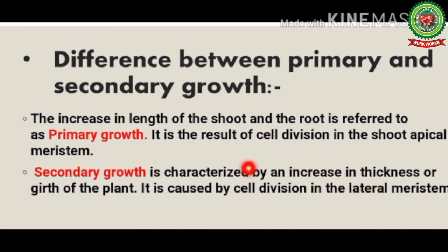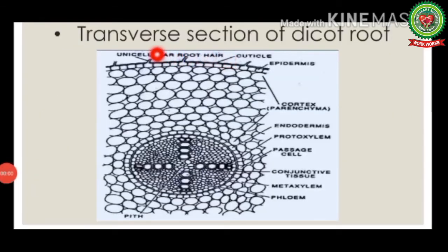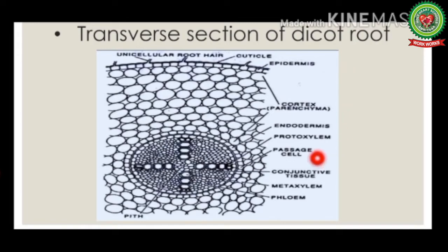Now we will discuss secondary growth in root, but before that we will have a look at the transverse section of a dicot root. The transverse section of a dicot root consists of the following structures.